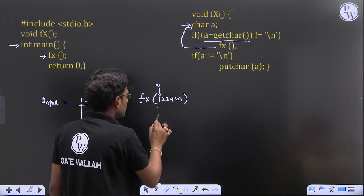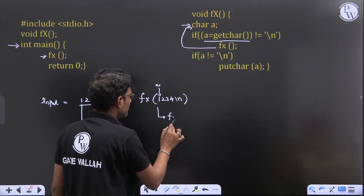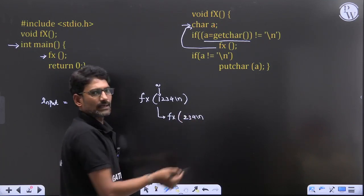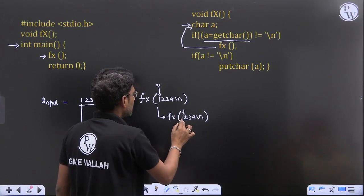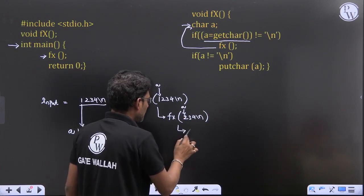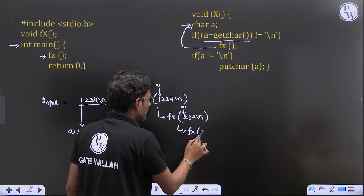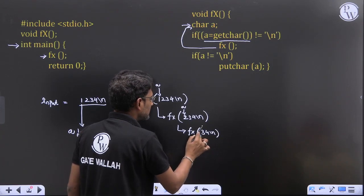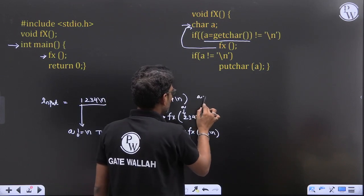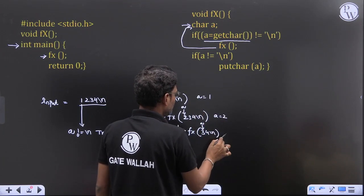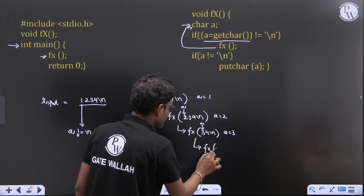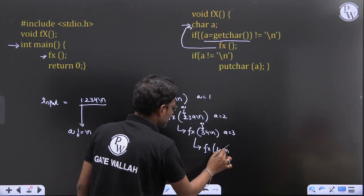Now what will a take as character? 2. Now again it is calling 3, 3, 4, backslash n, why? Because here a is equal to 1, here a is equal to 2, here a equal to 3, and again we are calling FX function with 4 backslash n.